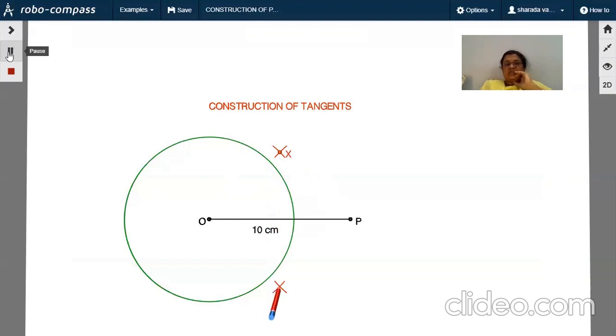Join XY, and the point of intersection of this line segment and OP line segment is M. Put your pointer at M and draw one more circle that passes through P and O.